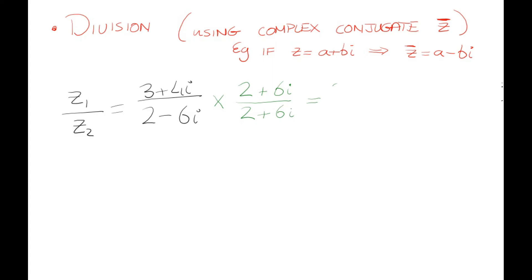Multiply the top by the top and the bottom by the bottom. 3 by 2 is 6, 3 by +6i is 18i, 4i by 2 is 8i, and 4i by 6i is 24 with an i². Underneath we have 2 by 2 which is 4, 2 by 6i which is 12i, -6i by 2 which is -12i, and -6i by +6i is -36i².